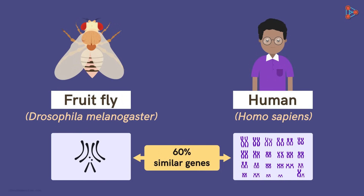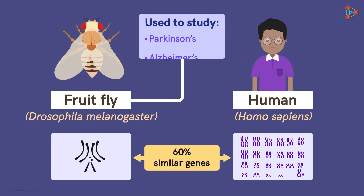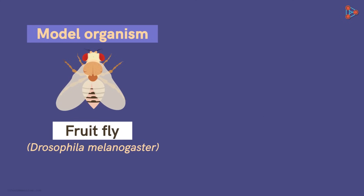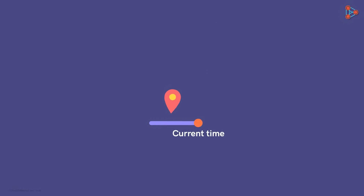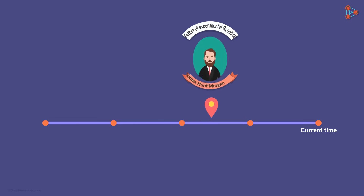And not only this, but the fruit fly is also used as a model to study the most serious neurodegenerative disorders including Parkinson's and Alzheimer's. So this little creature is nothing short of a miracle for us. But who thought of using these tiny model organisms for experiments? The use of Drosophila melanogaster as model organisms dates back to several years, and the organism rose to fame with the experiments of the father of experimental genetics, Thomas Hunt Morgan.